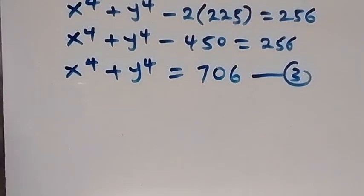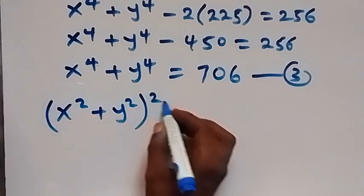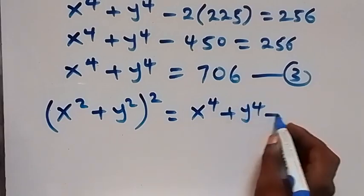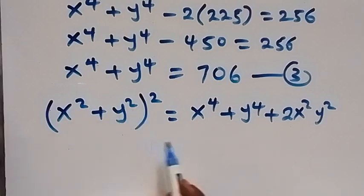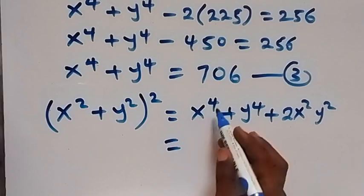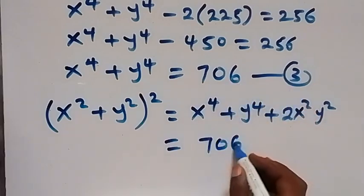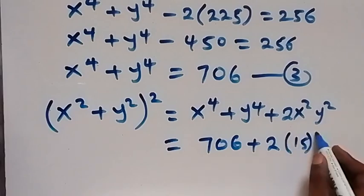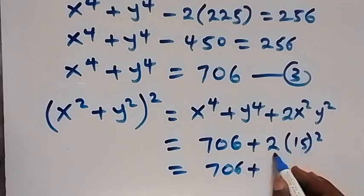Now from the identity (x² + y²)², when we expand this we get x to the power of 4 plus y to the power of 4 plus 2(xy)². We already know x⁴ + y⁴ equals 706 from equation 3, so we replace it: 706 plus 2 times (xy)². Since xy is 15, that's 2 times 15 squared, which is 2 times 225 giving us 450. So we have 706 plus 450.